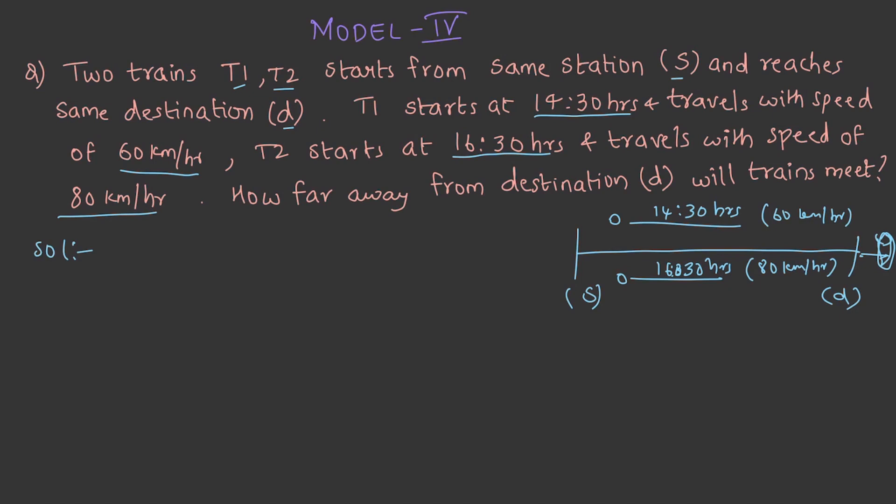Let us assume that they meet after 1430 hours. Then, it is going to be 60 into X is equal to 80 into X minus 2. X minus 2 is nothing but the relative time difference. That implies we get X value as 8.